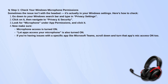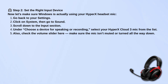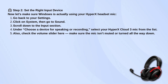Next, let's make sure Windows is actually recognizing your HyperX headset mic. Head back to your settings, click on System, and then go to Sound. Scroll down to the input section and under 'Choose a device for speaking or recording,' select your HyperX Cloud 3 mic from the list. Don't forget to check the volume slider here — make sure the mic isn't muted or turned all the way down.